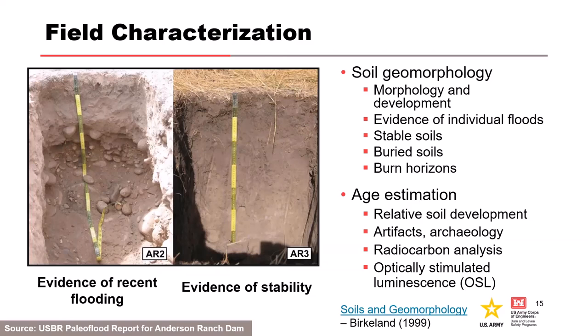Here's a visual example taken from two sites on the Boise River in Idaho. Looking at the profile on the left with a weakly developed, almost non-existent soil, the nature of the sediment suggests relatively recent flooding — the radiocarbon test results showed less than 200 years old, which supports that interpretation. Conversely, the profile on the right exhibits properties representative of a much better developed soil and a relatively long period of stability, with radiocarbon ages closer to 4,000 years old.